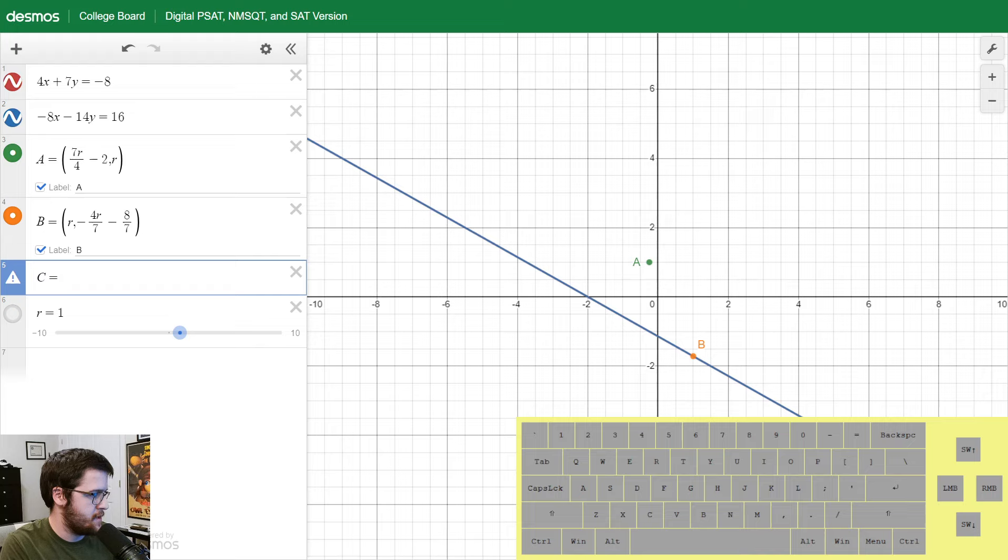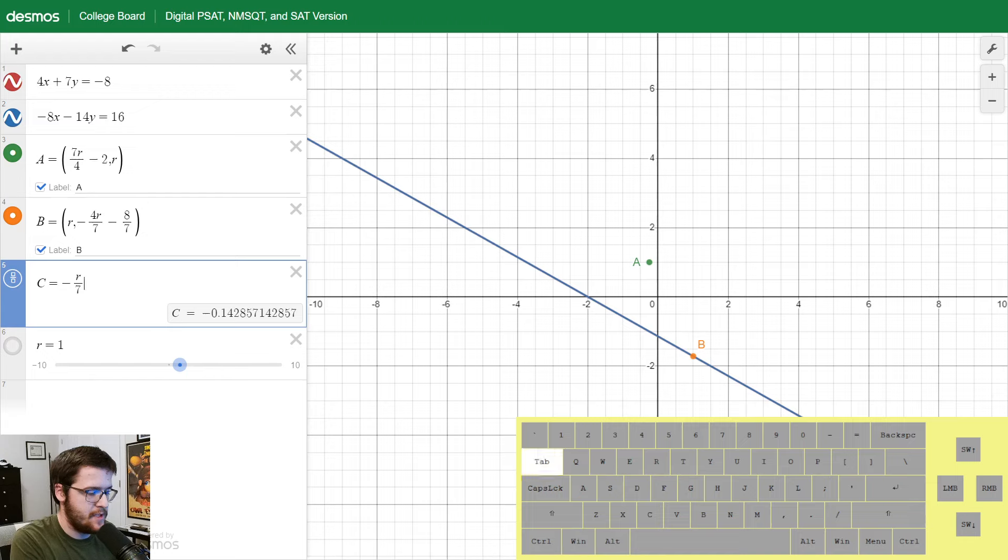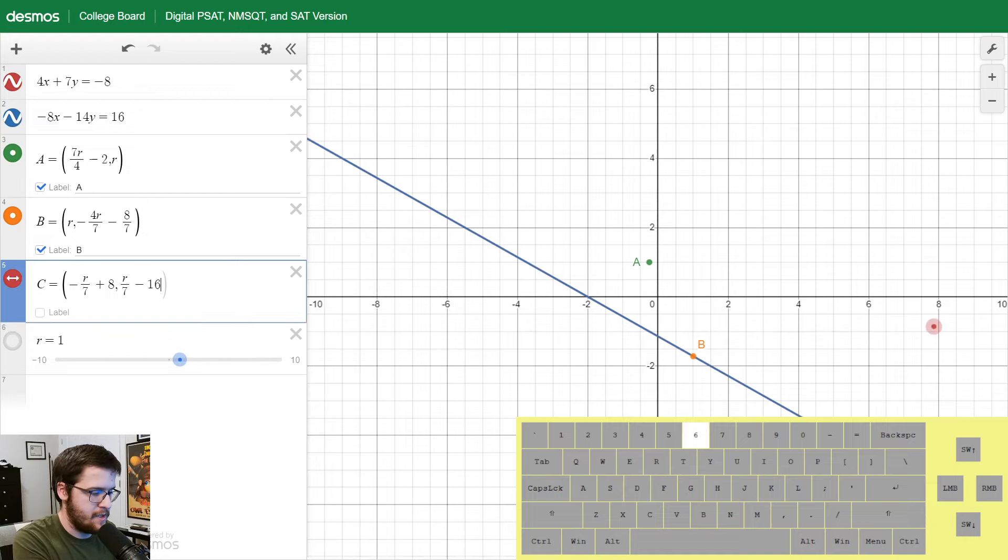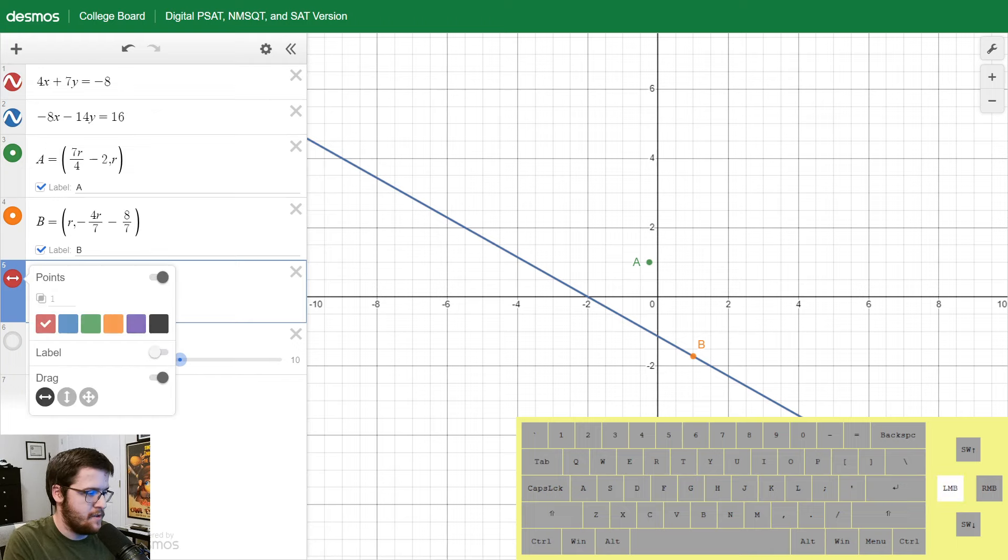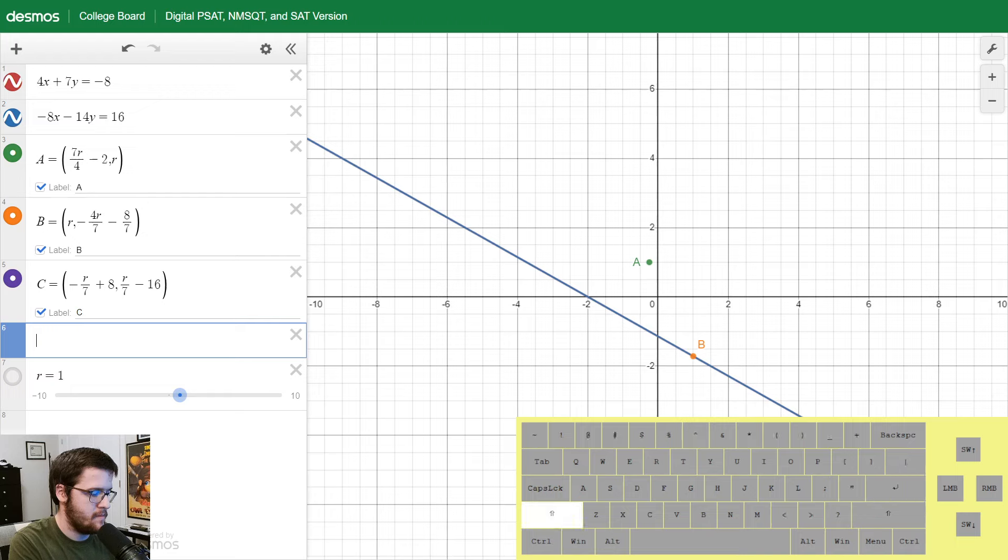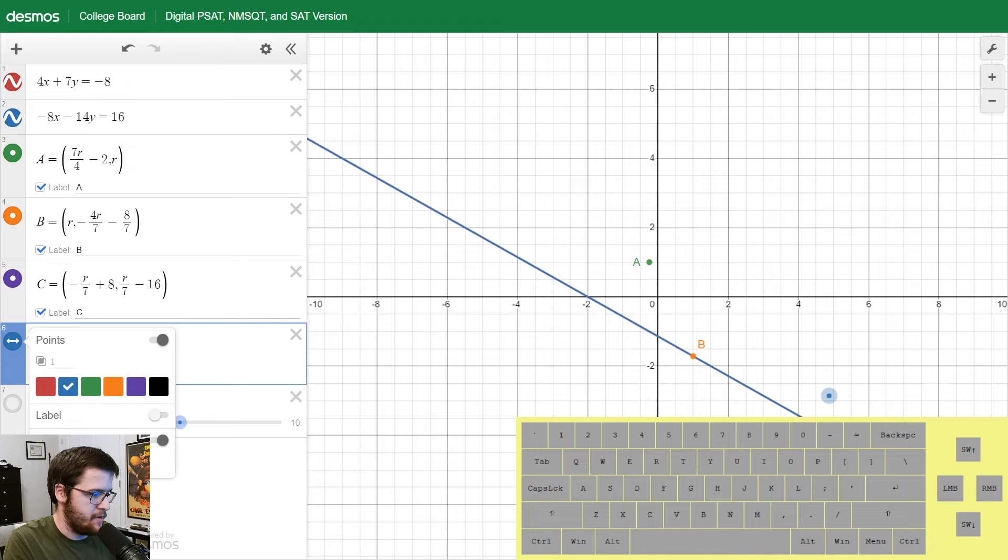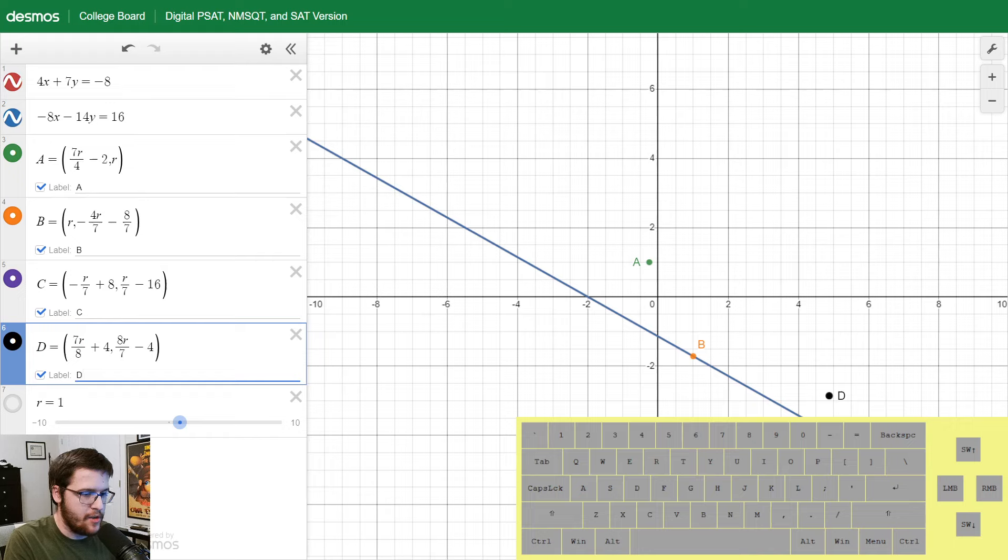Now we're going to do the same thing for all of them. B is R comma negative 4R over 7 minus 8 over 7. I'll remove the drag and go with orange, and label this as capital B. Let's do C: negative R slash 7 plus 8, comma R over 7 minus 16. Turn this feature off, do purple, and label it as C. Then capital D equals 7R over 8 plus 4, comma 8R over 7 minus 4. Turn off the drag, make it black, and label it capital D. Great, now we have everything we need.